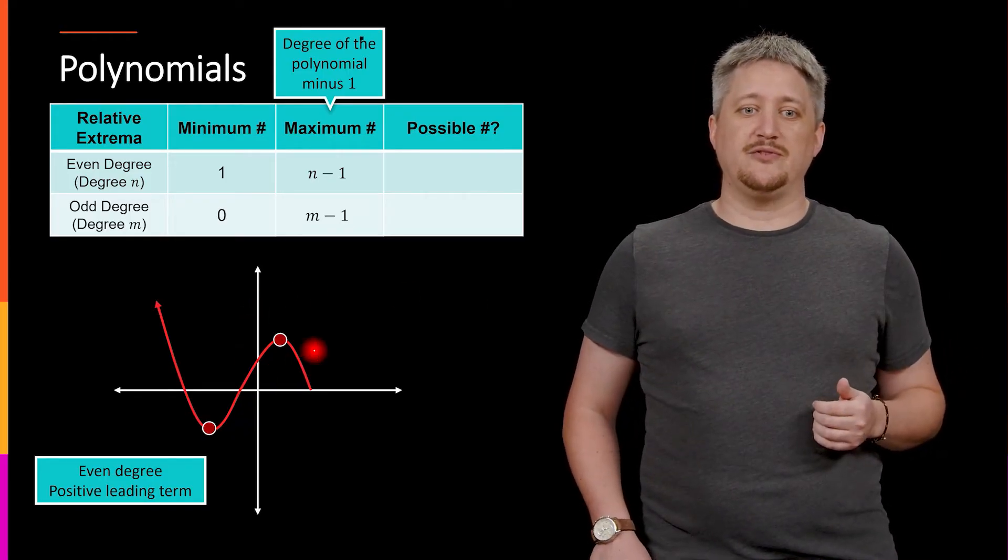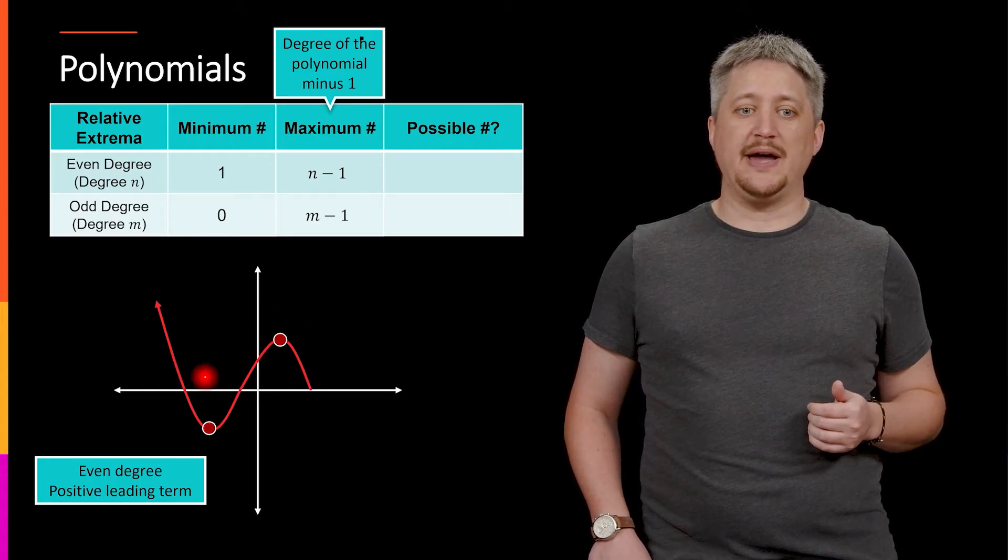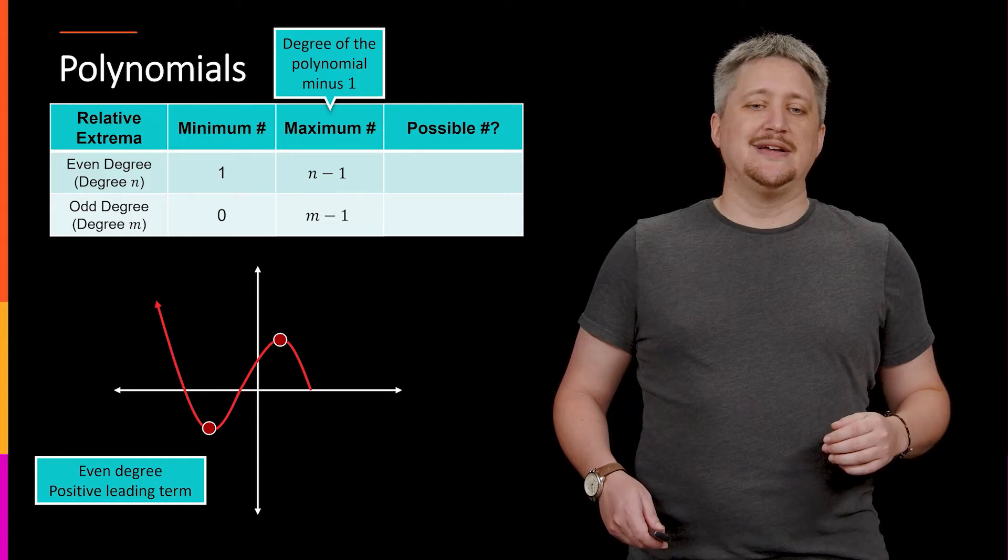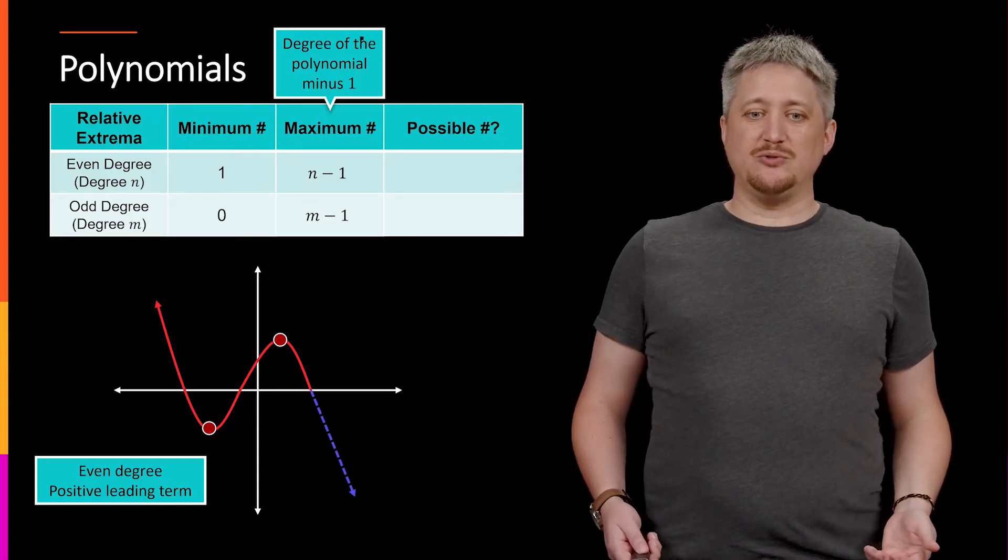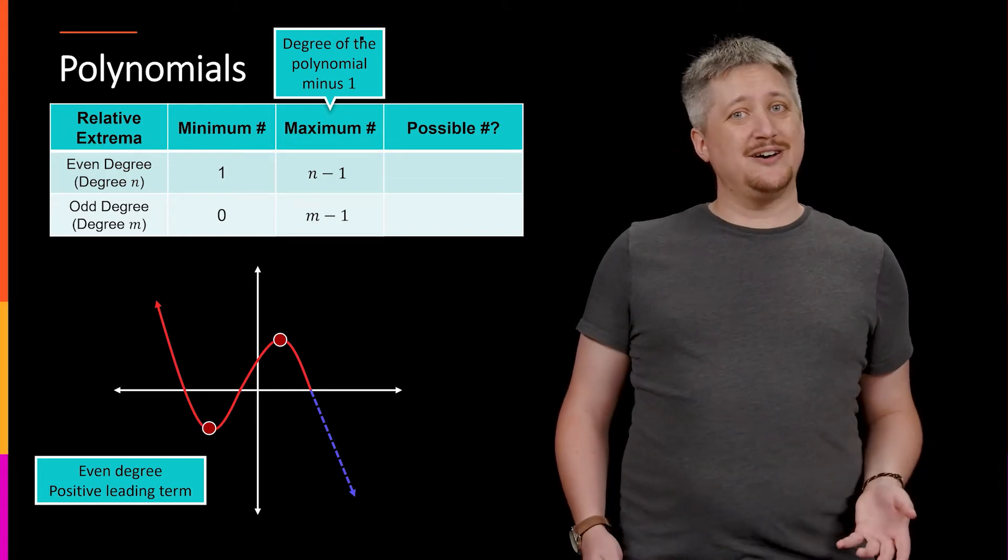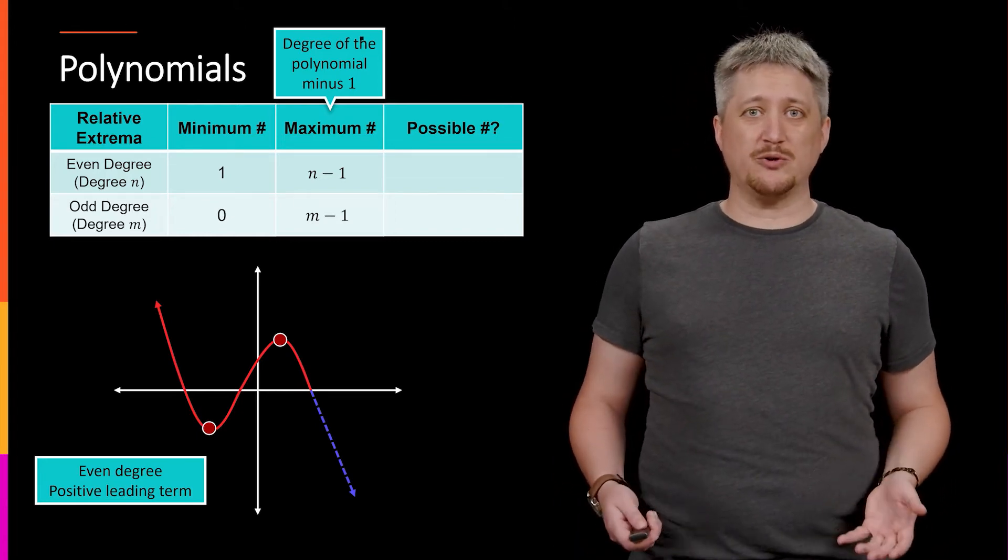but that'll give me, so I now have one up here, which is the local max, one down here, local min. I have two, perfect, right? Except if I keep going, then it goes down, down, away to infinity. And that's not how even degree polynomials work.